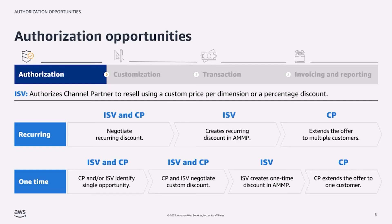The second type is a one-time authorization opportunity. In this case, an ISV uses the AWS Marketplace Management Portal to create a discount that the CP can only use once. From there, the CP can mark up the wholesale price when creating a CPPO for a buyer.